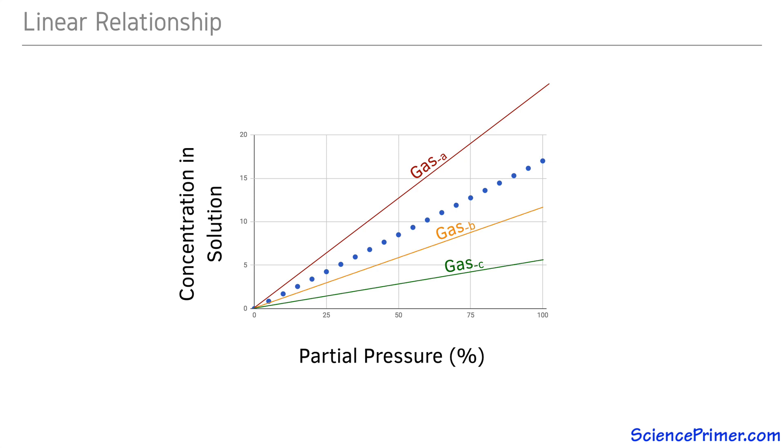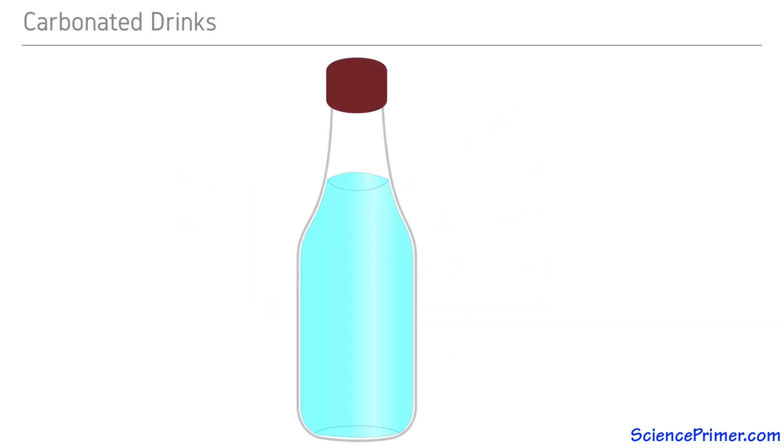There are conditions where this relationship does not hold, but in general, it does a good job of describing patterns of gas solubility in many real-world situations. One that we all have experience with is the behavior of bottles and cans of carbonated drinks. Carbonated drinks have carbon dioxide added under pressure before the bottles are sealed. In an unopened bottle,